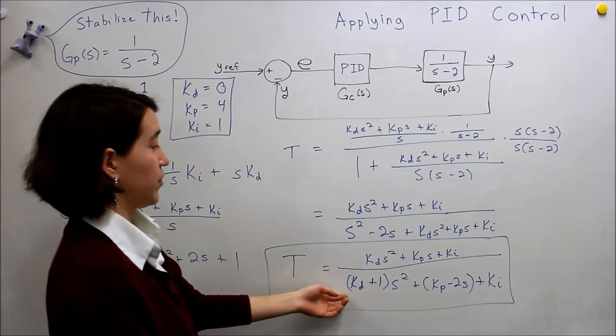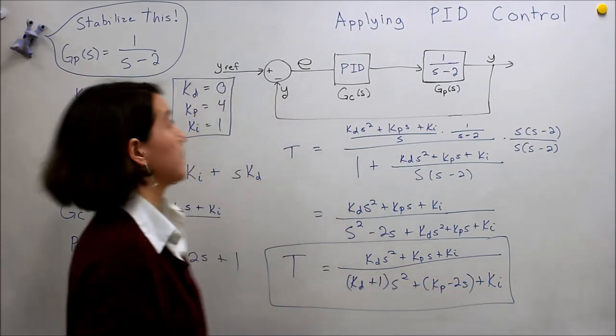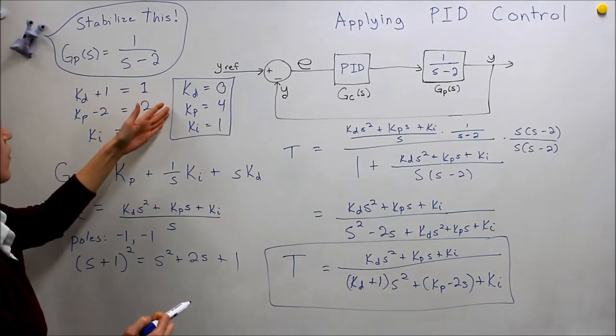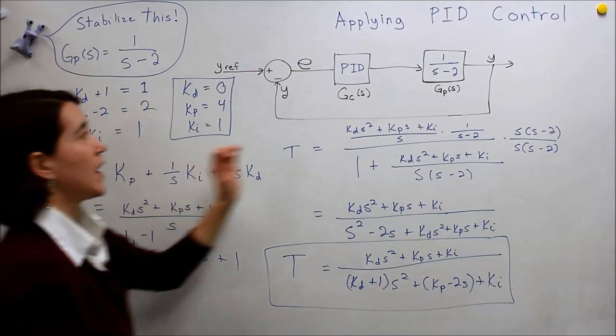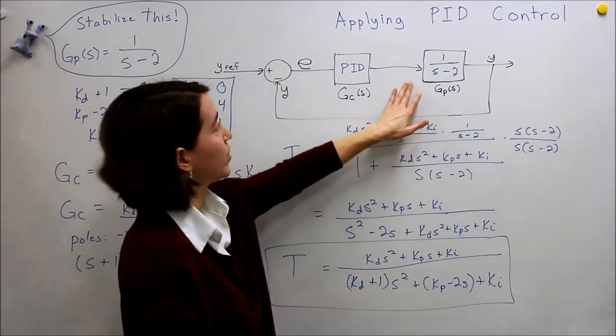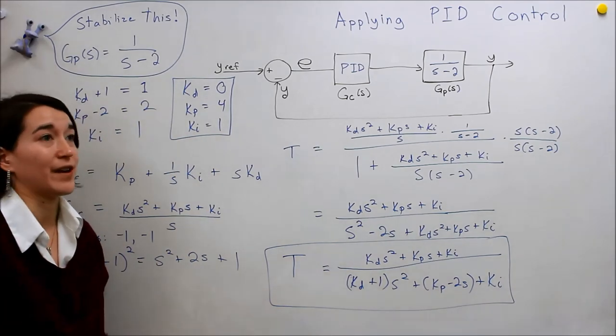So going through this process, and in this case we just picked poles and said we want these specific poles, we were able to choose these coefficients to achieve that. So if we put in these coefficients, we should see a stabilized output here. So let's look at that in MATLAB real quick and just confirm our findings.